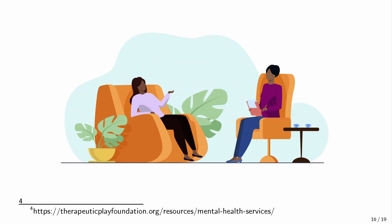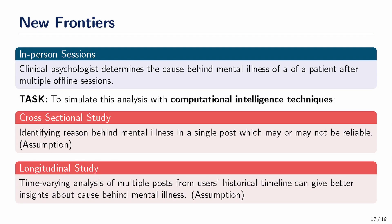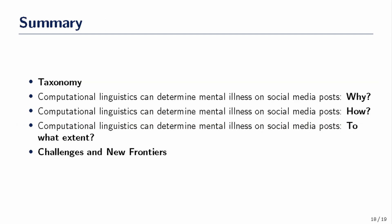New frontiers include cross-sectional study — identifying reasons behind mental illness in a single post — and longitudinal study, where time-varying analysis of multiple posts from a user's historical timeline gives better insights into causes. Causal analysis can be studied at both levels. To summarize: computational linguistics can determine mental illness on social media posts, addressing what, how, and to what extent, along with the challenges and new frontiers covered in this talk.